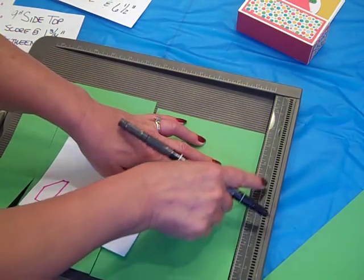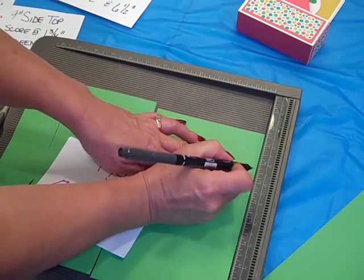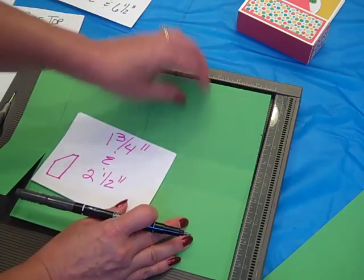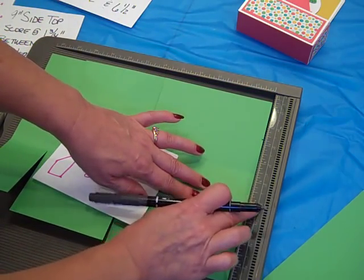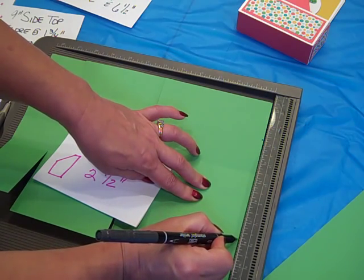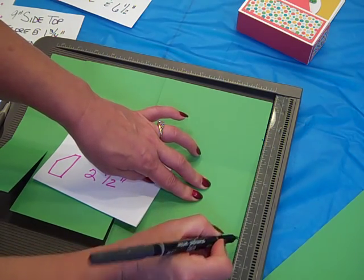So again at zero, 1¾ from that score line. Do the same thing on the other, line it up with six or really I'm lining it up with the zero there and making a mark at 1¾.